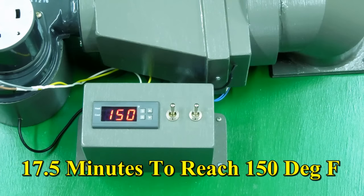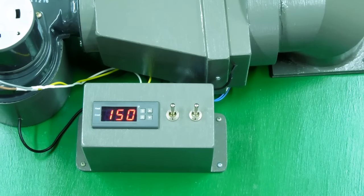It took a little over 17 and a half minutes to go from room temperature 64 to 65 degrees up to 150 degrees. And that's using both elements.